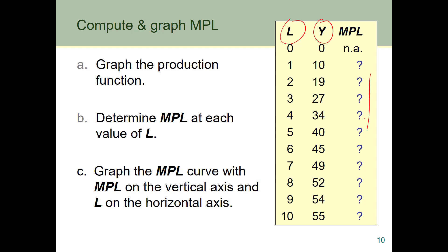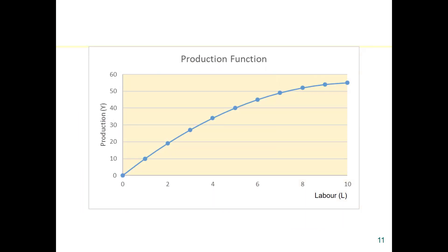The production function is just plotting Y against L. Here we have that production function, with L on the horizontal axis and output on the vertical axis. What we see is the function flattens out as L increases — the slope down here is greater than the slope up here. This is characteristic of diminishing returns.